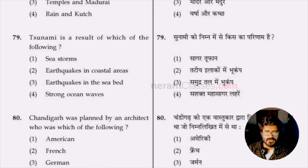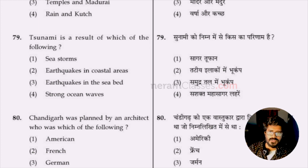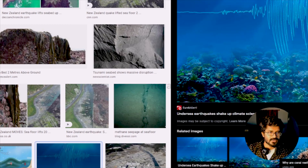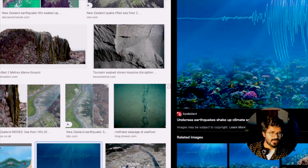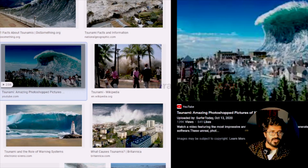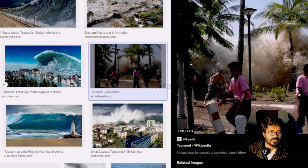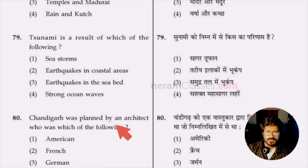Question 79: a tsunami is the result of which of the following — sea storms, earthquake in coastal areas, earthquake in the seabed, or strong ocean waves? A tsunami is a natural calamity caused by an earthquake under the seabed — an undersea earthquake creates the large waves. Option three, earthquake in the seabed, is the answer.